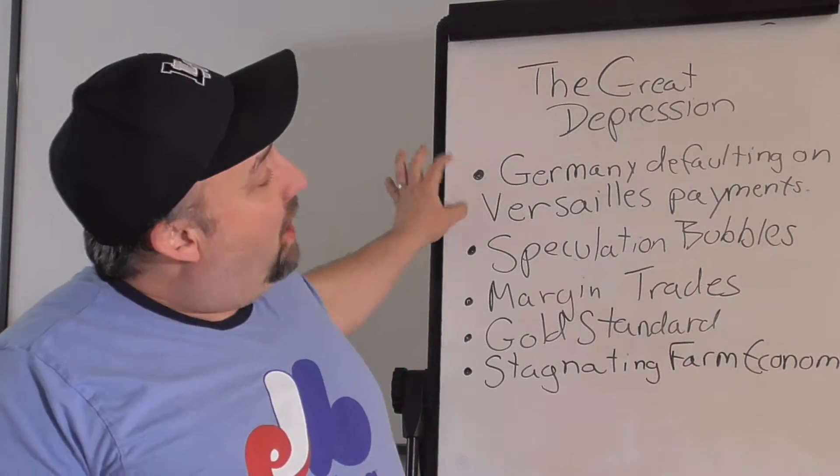Starting with those non-native factors: why would Germany defaulting on its Versailles payments cause a problem for the United States? The number one factor is that France, Britain, and Italy had borrowed from U.S. banks to pay for their war. They were using the money they were getting from Germany to pay those colossal loans back. When Germany defaults, those countries stop paying back American banks — that causes bank failures right off the top. The other cost is those countries have less money to do business with and are buying less stuff from the United States, which also has a knock-on effect.